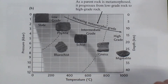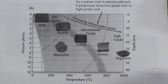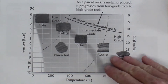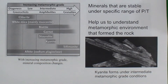Remember that if the temperatures are above about 850 to 1100 degrees Celsius, then most minerals will melt and then we have igneous rocks. The minerals that are present in a rock can also help us understand the type of metamorphism and the name of the rock.